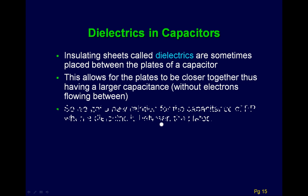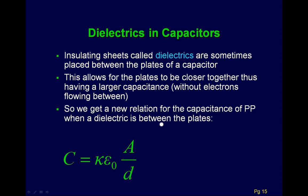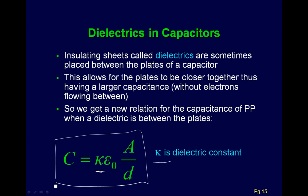Most capacitors have what's called a dielectric in between them — usually some kind of insulator. The purpose is it allows the plates to be closer together. When plates get closer, you can store more charge, but at some point electrons will jump between them, creating a little spark that limits storage. Adding a dielectric insulator prevents this, and each dielectric has a k constant. This gives the same capacitance equation multiplied by k, which increases it slightly.